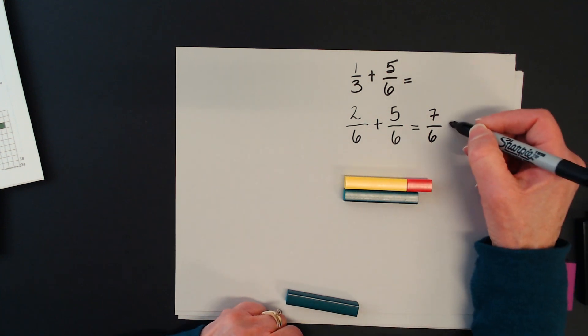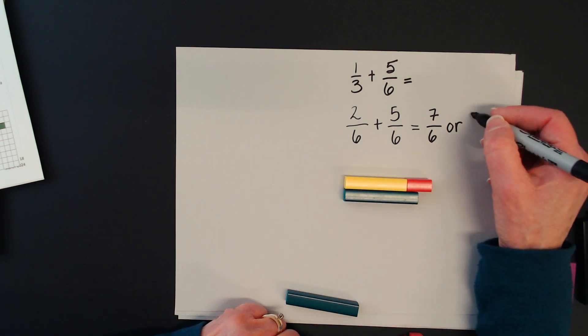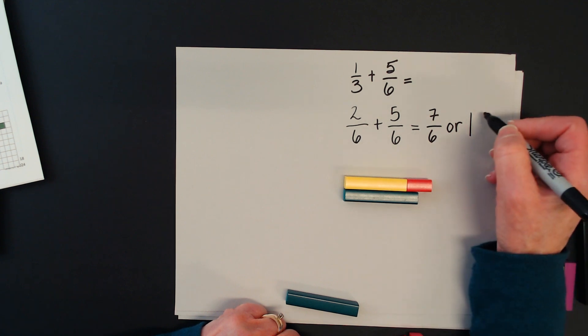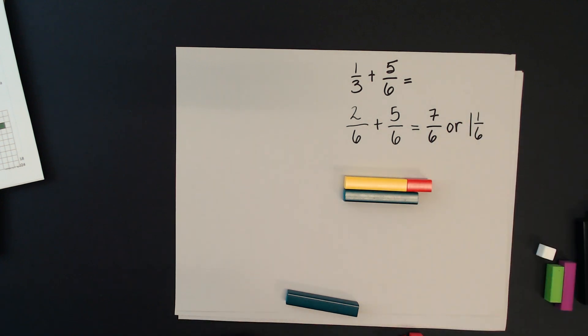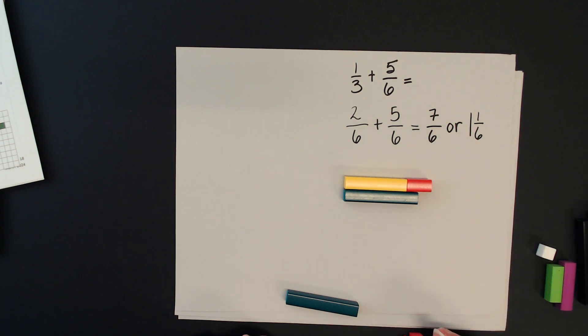Now if I want to write it as a mixed number, I can see here that I have one whole, and then I would have one more sixth in addition to that. So 7/6 is equal or the same as the mixed number 1 and 1/6.